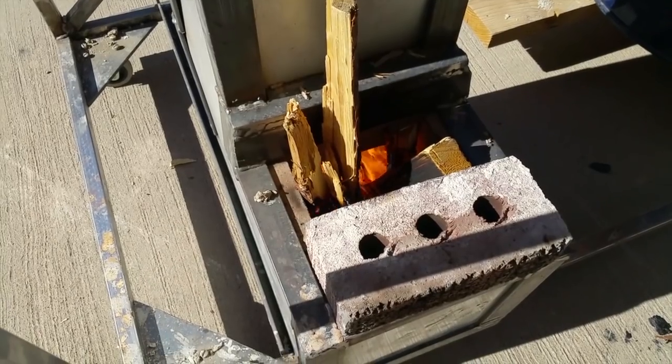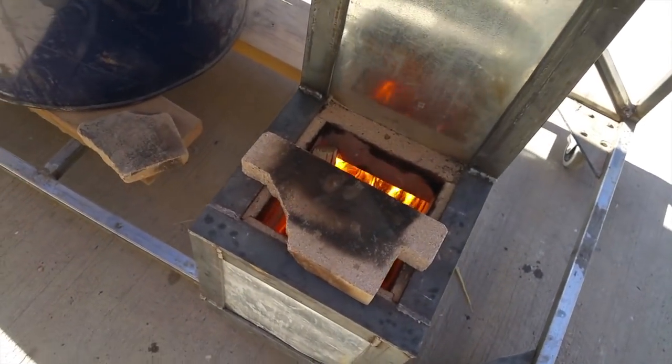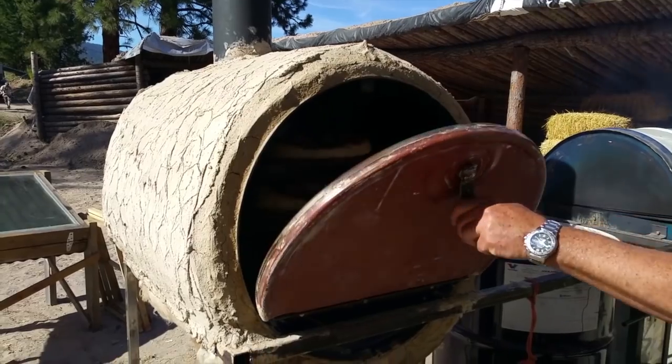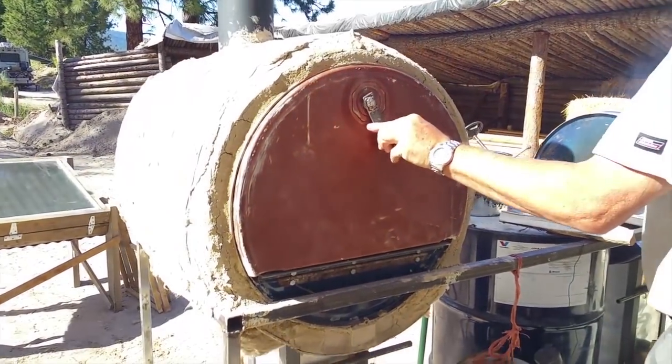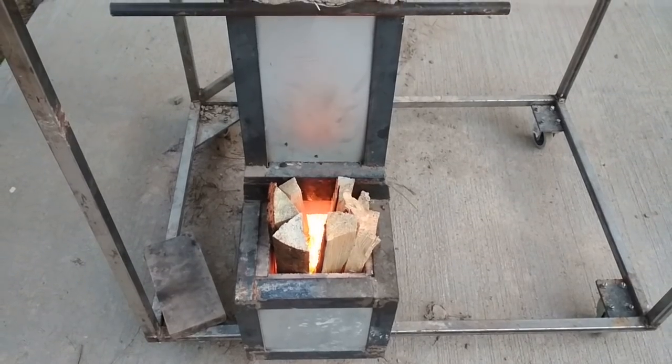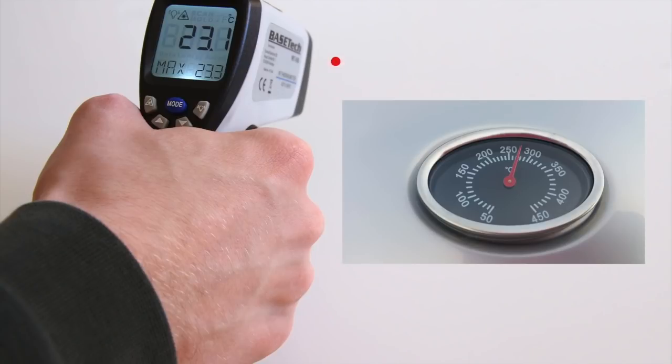The rocket oven should heat up faster than any other oven. Put your pizza in. Put bigger wood in the feed. Smaller wood makes for a hotter oven. Check the temperature every 5 to 10 minutes. As you get more skilled at using the rocket oven, you won't need to check the temperature as often.